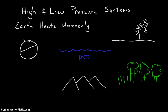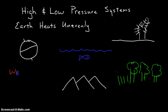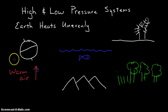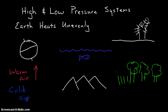All of this is going to create different air masses. We know that a warm air mass — warm air — will rise. And cold air will, of course, sink. That leads us right into our discussion of high and low pressure systems.